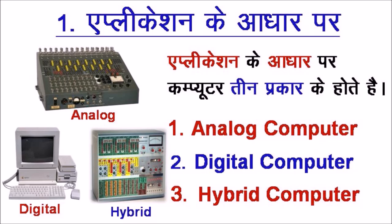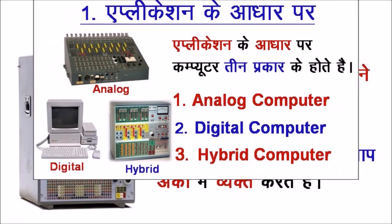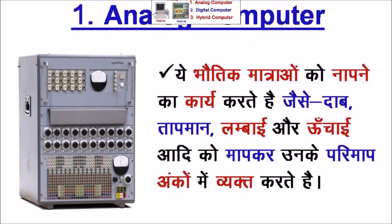पहला है एप्लिकेशन के आधार पर — कम्प्यूटर तीन प्रकार के होते हैं। पहला एनालॉग कम्प्यूटर, दूसरा है डिजिटल कम्प्यूटर, और तीसरा है हाइब्रिड कम्प्यूटर। पहले हम बात करते हैं एनालॉग कम्प्यूटर की — ये भौतिक मात्राओं को मापता है।